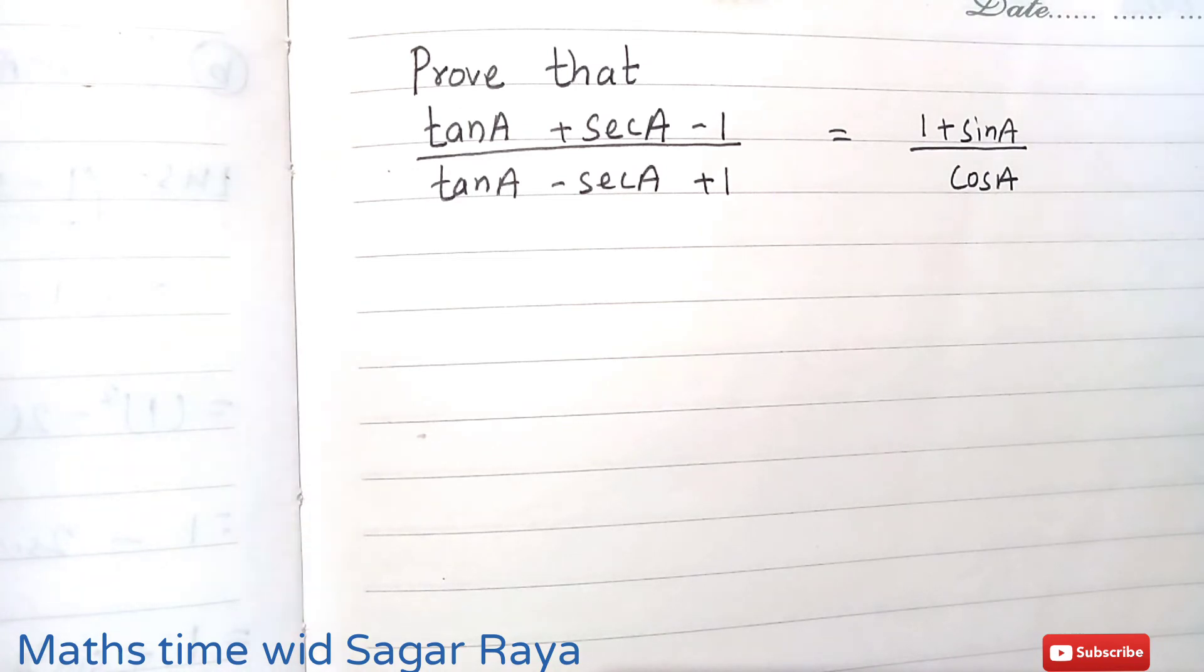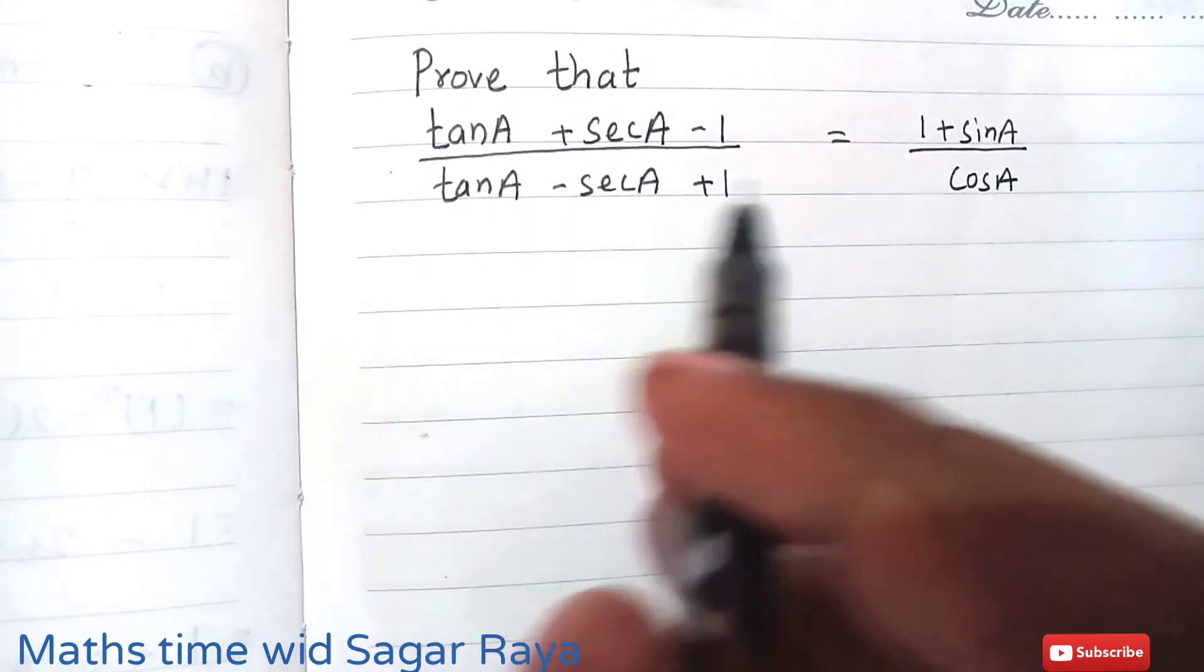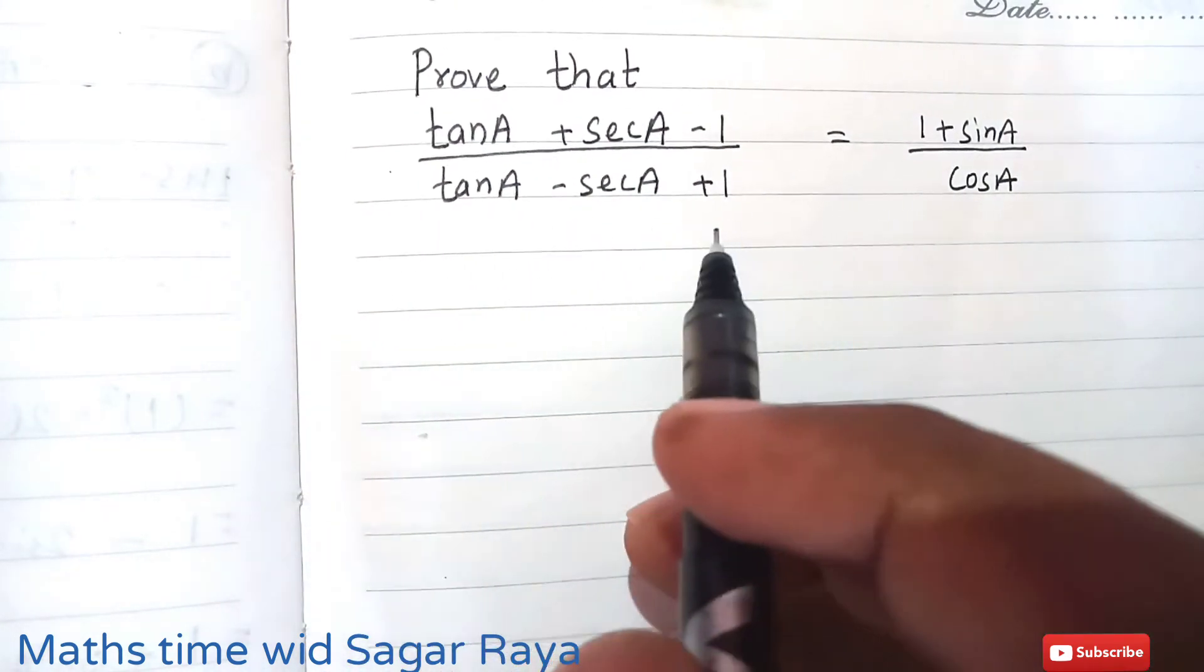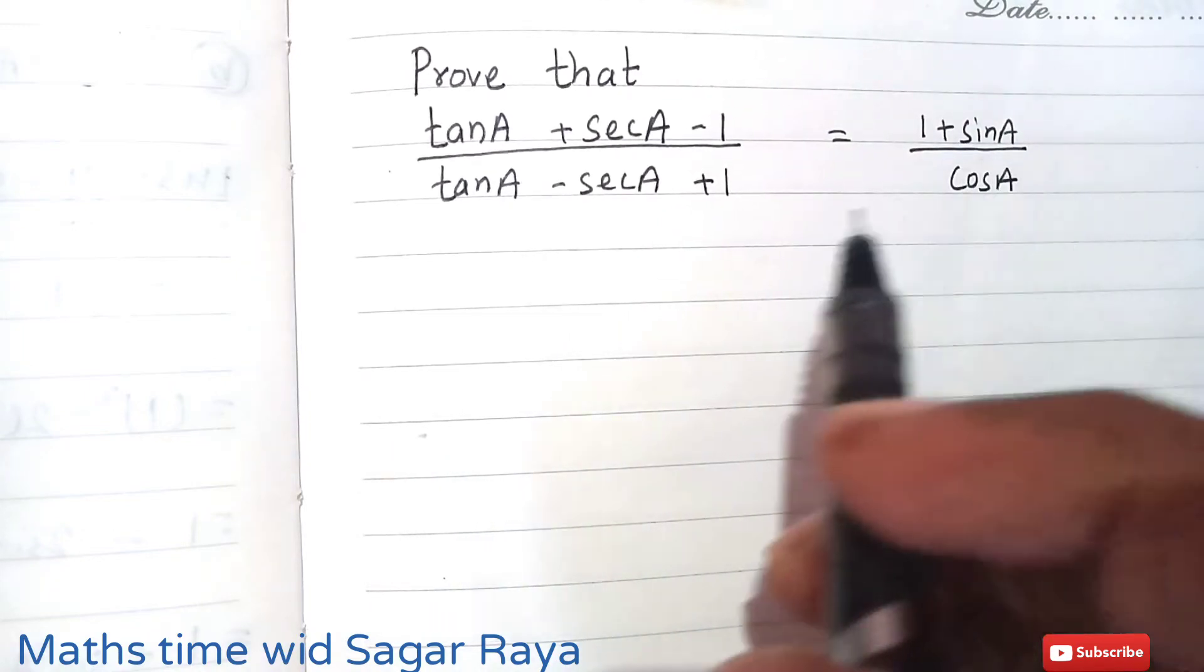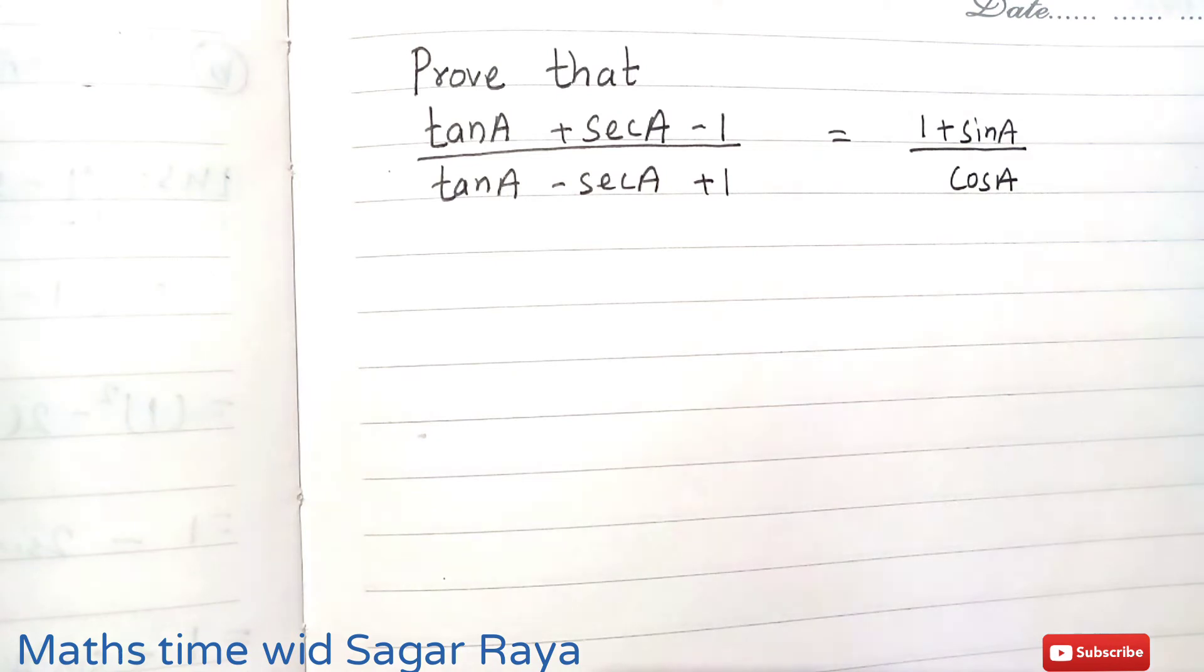In the screen you can see the question: Prove that (tanA + secA - 1)/(tanA - secA + 1) equals (1 + sinA)/cosA. So this question you can prove by changing this 1. Instead of 1, you may write sec²A - tan²A.